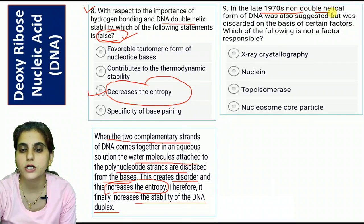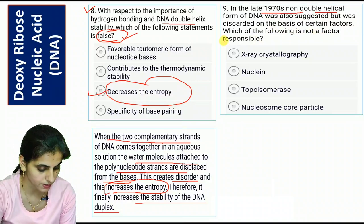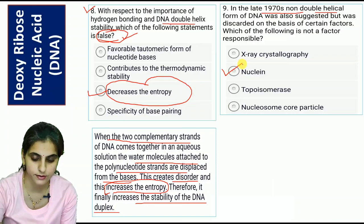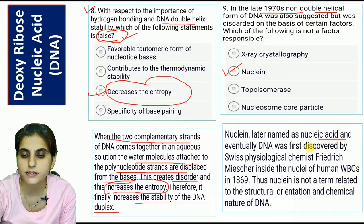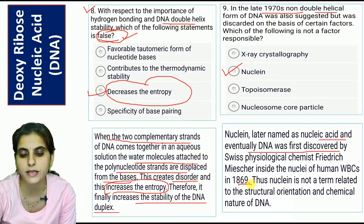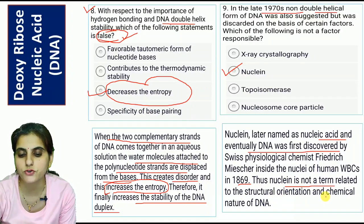Question nine: In the late 1970s, a non-double-helical form of DNA was suggested but was discarded. Which of the following is not a factor responsible? The correct option is 'nucleon.' Nucleon, later named nucleic acid and eventually DNA, was first discovered by Swiss physiological chemist Friedrich Miescher inside the nuclei of human white blood cells in 1869. Thus, nucleon is not a term related to the structural orientation and chemical nature of DNA.